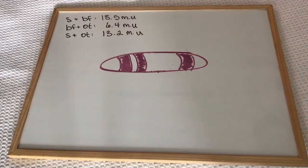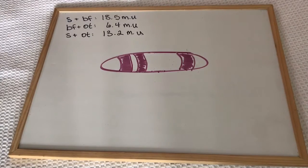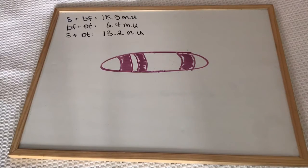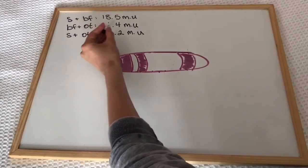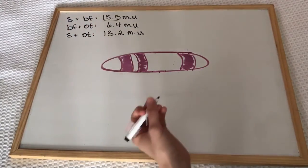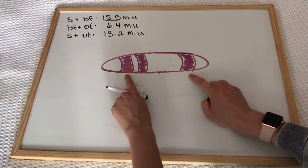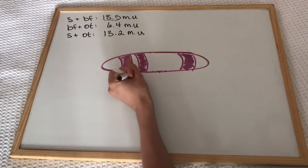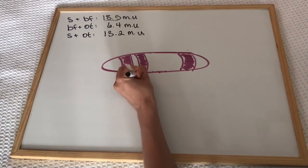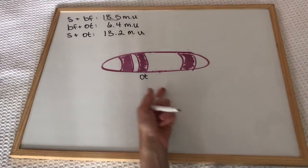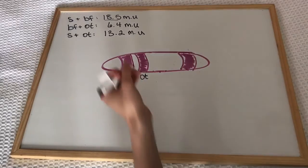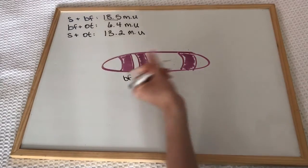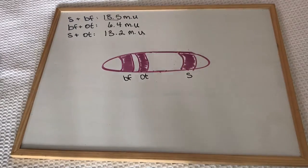Now that we finally have the mapping units for each combination, we're going to put them together using a little bit of critical thinking. S and BF have the farthest distance between them at 18.5, so S and BF are going to be on the ends, which means OT is going to be in the middle. Then it begs the question: which one is closer to OT? That happens to be BF. BF and OT are only 6.4 apart, so this one is BF and this one is S, which means the order is BF, OT, and S.